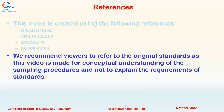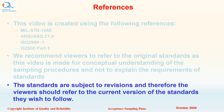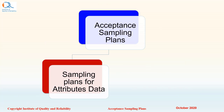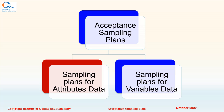We recommend viewers to refer to the original standards, as this video is made for conceptual understanding of the sampling procedures and not to explain the requirements of particular standards. Most of the standards have similar requirements and the switching procedures differ slightly but are still predominantly similar to MIL-ST105E. The standards are subject to revisions, and therefore viewers should refer to the current version of the standards they wish to follow. Acceptance sampling plans are of two types: for attributes data and for variables data.